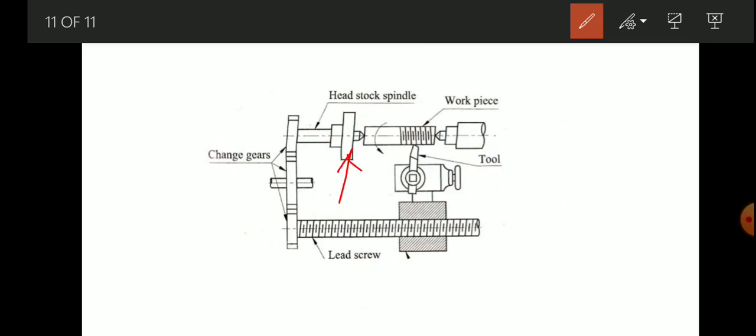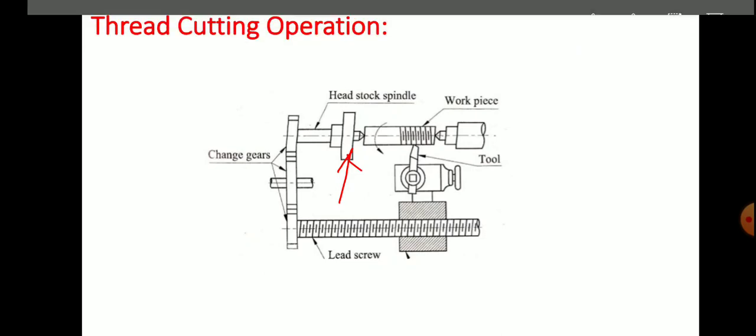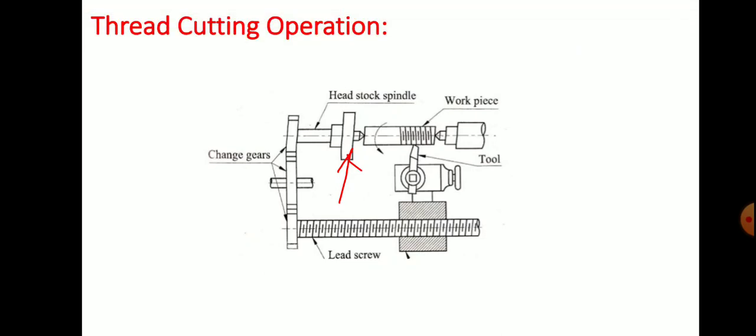The longitudinal feed is equal to the pitch of the thread to be cut per revolution of the job. A definite ratio between the longitudinal feed and the rotation of the headstock should be calculated. The speed of the work rotation and lead screw will cut a screw of desired pitch. This is done by a change gear mechanism. This ends our second unit. Thank you.